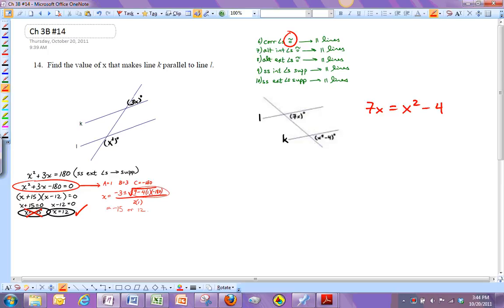So that means that 7X should be the same as X squared minus 4. So if I get everything over to one side to make it equal 0, I'm going to get 0 equals X squared minus 7X minus 4.